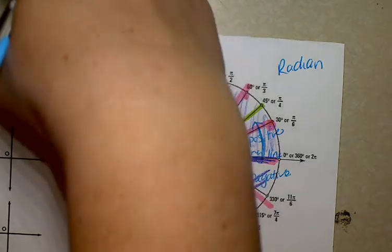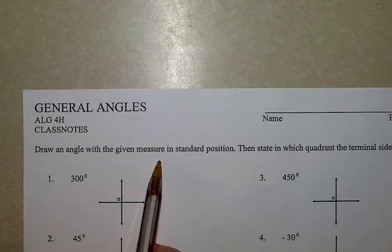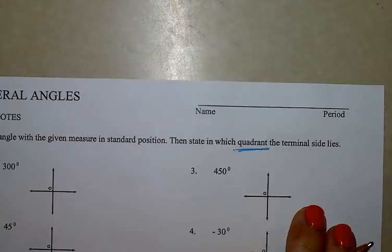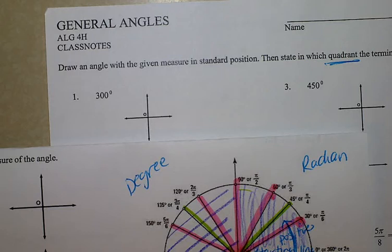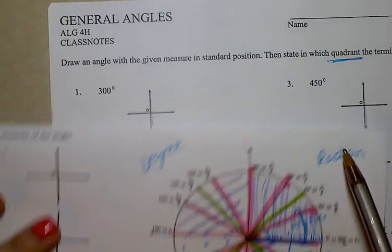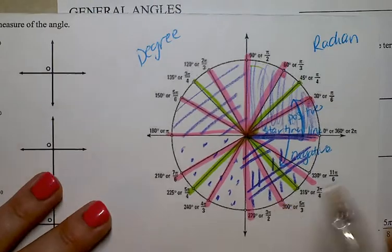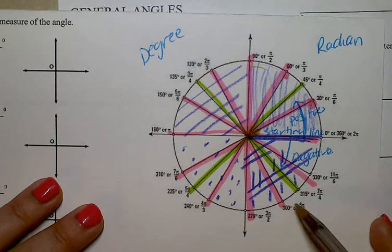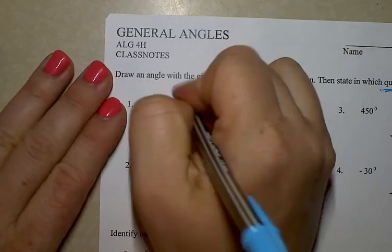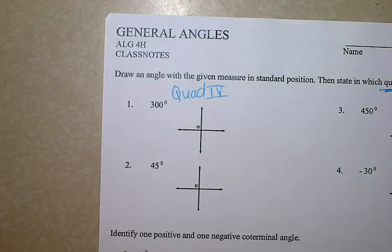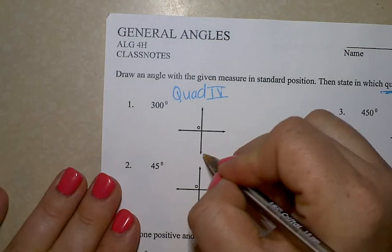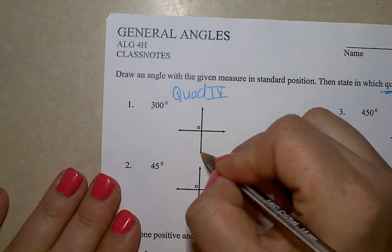The first learning objective says: draw an angle with the given measurement and state which quadrant the terminal side lies in. For 300 degrees — find 300 degrees on your circle and put your pencil on it. 300 degrees is right here. You can see it's on one of those 30-degree measurements. It's in quadrant four — I'll abbreviate that as 'Quad IV.'